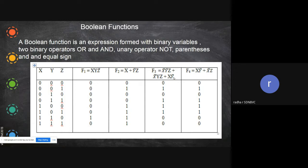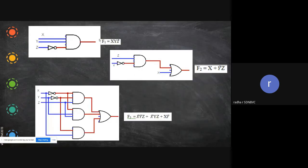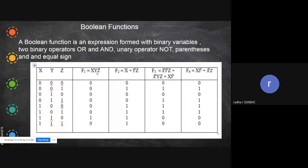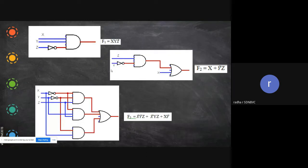We have seen how to arrive at this solution. Now we are going to see how to draw the circuit diagram for these Boolean functions. Let us say this first equation, that is f1 equal to xyz̄.